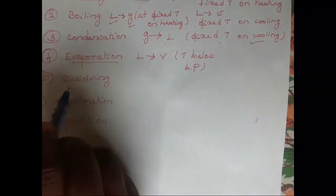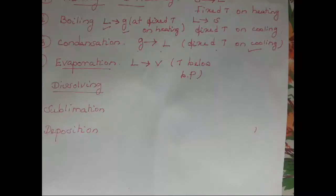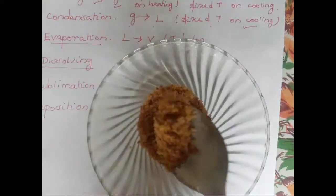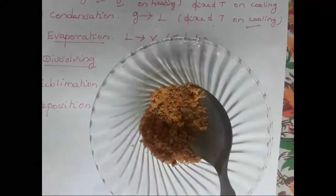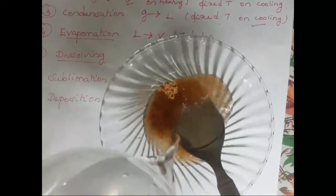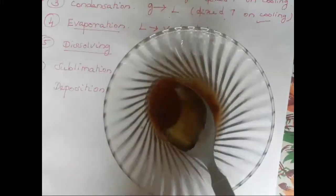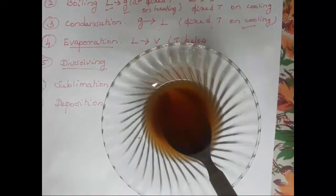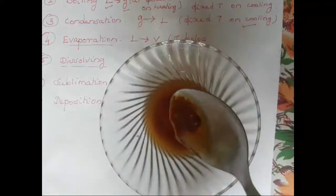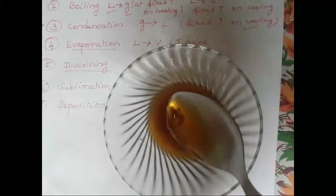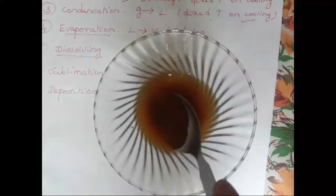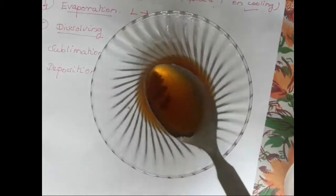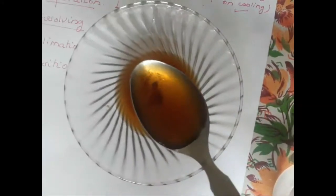Now let us see the next example, that is dissolving. Dissolving is also a physical change — no new substance is going to form. I have taken a jaggery powder and I am going to add a little amount of water to it. The jaggery powder gets dissolved in water. Can you witness any new substance? No, no new substance is formed. When I heat this solution again, I will get back the jaggery powder. So dissolving is also a physical change.